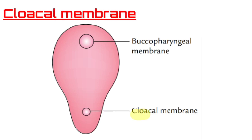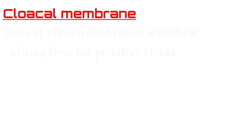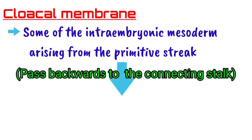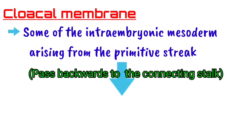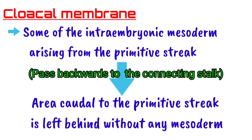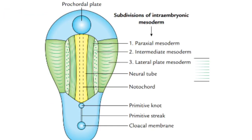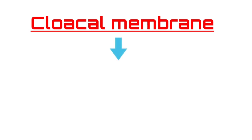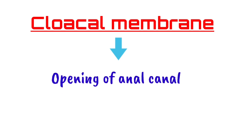The next case is the cloacal membrane. Some of the intraembryonic mesoderm arising from the primitive streak passes backwards toward the connecting stalk. As a result, an area just caudal to the primitive streak is left without any mesoderm — this is the cloacal membrane, which is diametrically opposite the prochordal plate at the tail end.